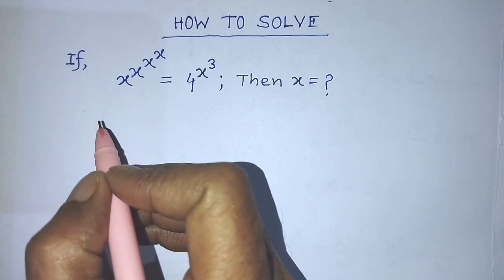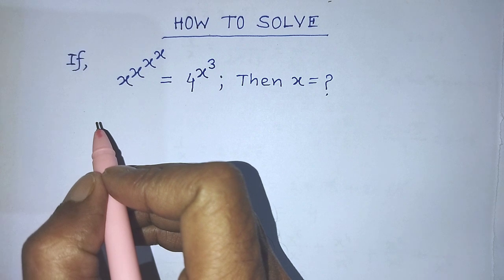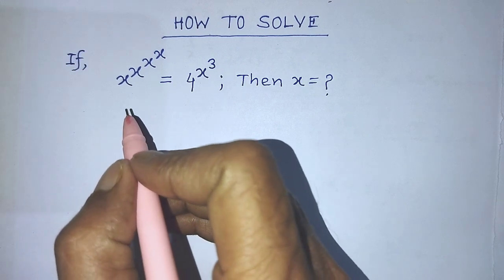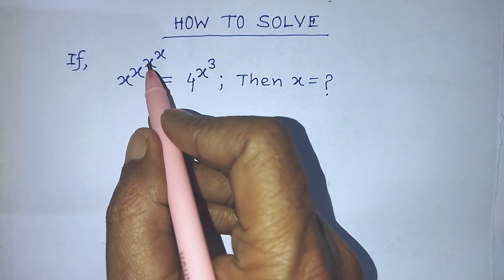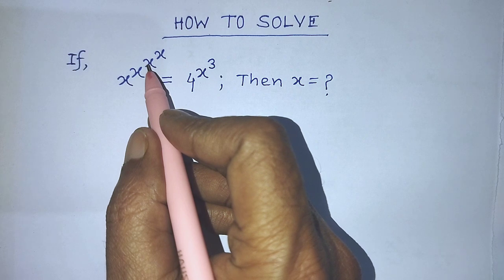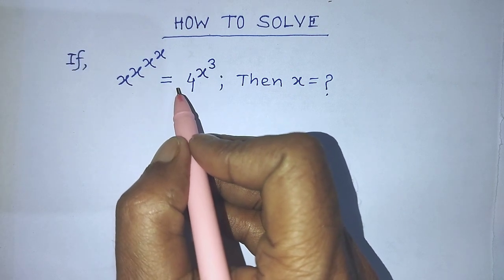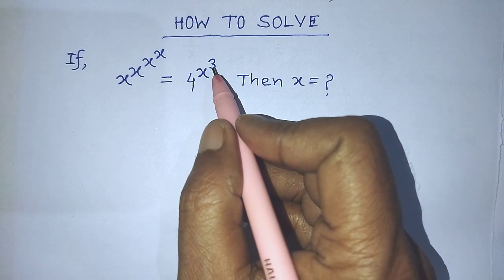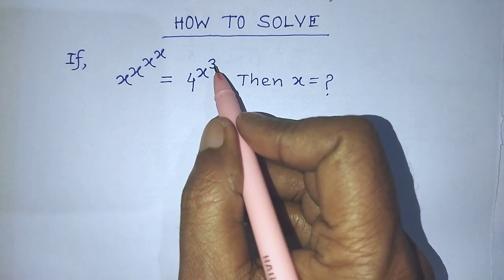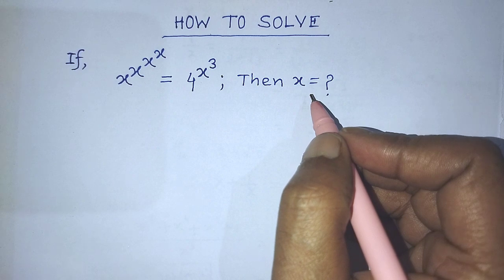Hi guys, welcome back to my channel AliMassBlog. Today our question is: if x raised to the power of x to the power of x to the power of x is equal to 4 raised to the power of x to the power 3, then find the value of x.